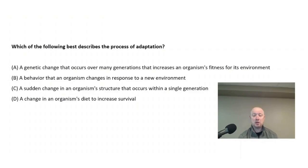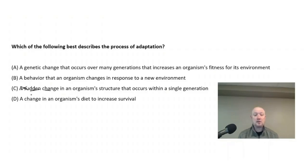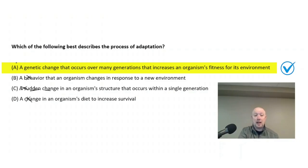Adaptation is a gradual process that can take many generations, where an organism passes traits on to its offspring. Anything sudden, like choice C, is eliminated. Choice B — a behavior that an organism changes in response to a new environment — doesn't happen that quickly, so I'm eliminating B. Choice D, a change in an organism's diet, doesn't capture the gradual change we need, so D is eliminated. The correct answer is A: a genetic change that occurs over many generations that increases an organism's fitness for its environment.